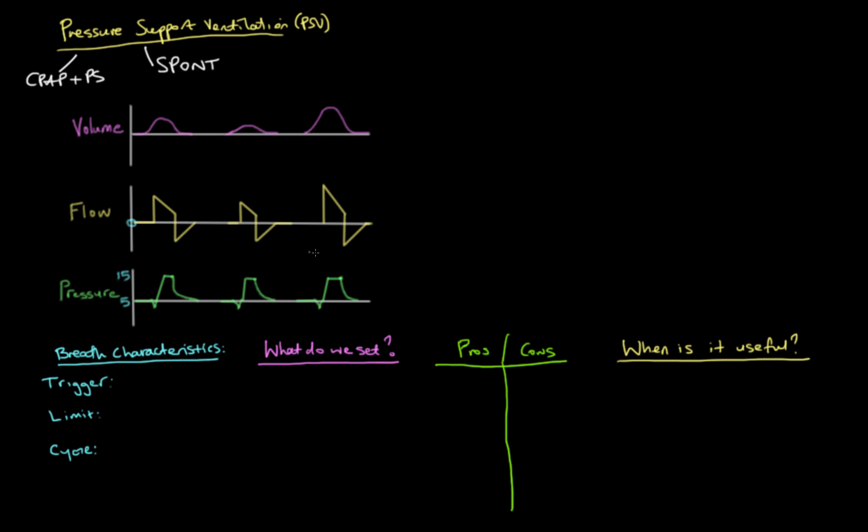The crux of pressure support ventilation is that the patient has as much control over their breathing as we can give them. They're on a ventilator, but they are controlling most of what's happening with their breaths. Unlike controlled ventilation, there is no set respiratory rate and no set minute ventilation. We don't control when the breaths take place, how big they are, or how much minute ventilation is achieved. That's all controlled by the patient.